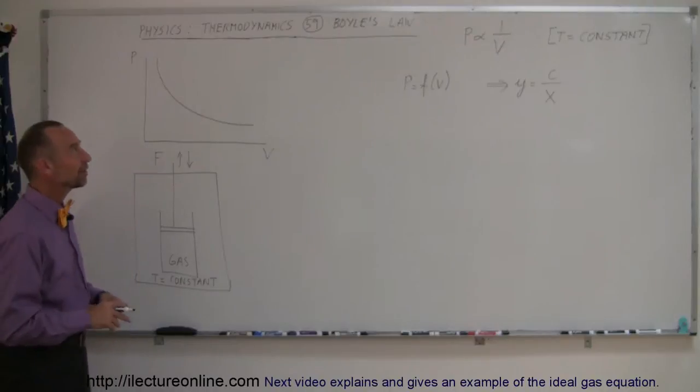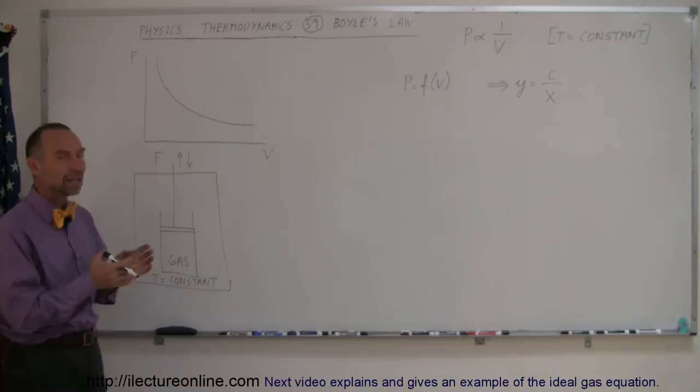And here is the third relationship between some of the state variables of a gas. In this case, it's known as Boyle's Law. Boyle was able to find the relationship between the pressure and the volume of a gas by keeping the temperature constant.